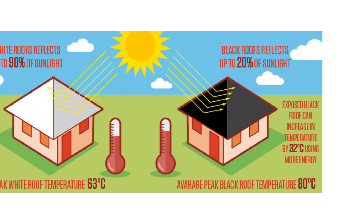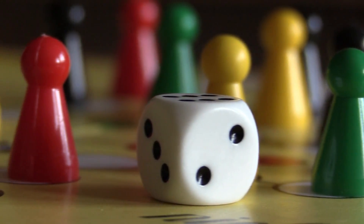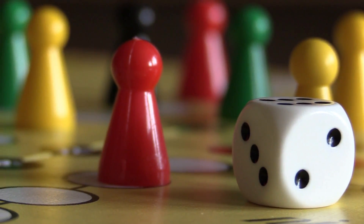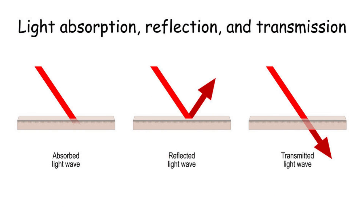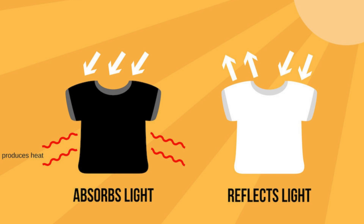So let's get started. The nature of colors: colors are the result of the way objects interact with light. When light strikes an object it can be reflected, transmitted, or absorbed. The color we perceive is the result of the wavelengths of light that are reflected by the object. Different colors correspond to different wavelengths.